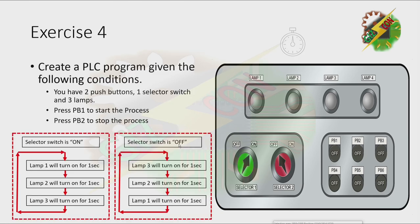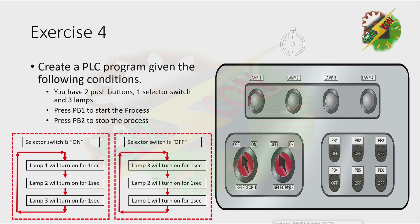Now let's go to our next exercise. Exercise 4. Create a PLC program given the following conditions. You have two push buttons, one selector switch, and three lamps. Press PB1 to start the process. Press PB2 to stop the process. As you can see here, there are two processes. The process will start if PB1 is pressed, and the process will stop if PB2 is pressed. The process that it performs will depend on the status of the selector switch. Now our selector switch is on — let's press PB1. Now let's turn off the selector switch. Let's press PB1 again.